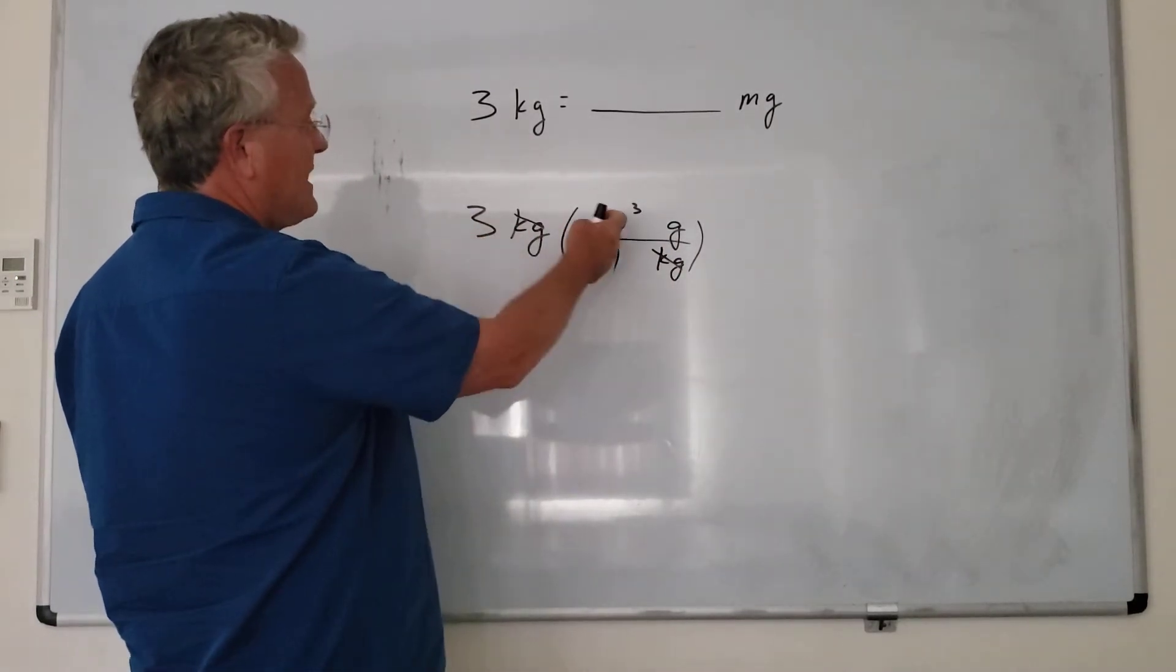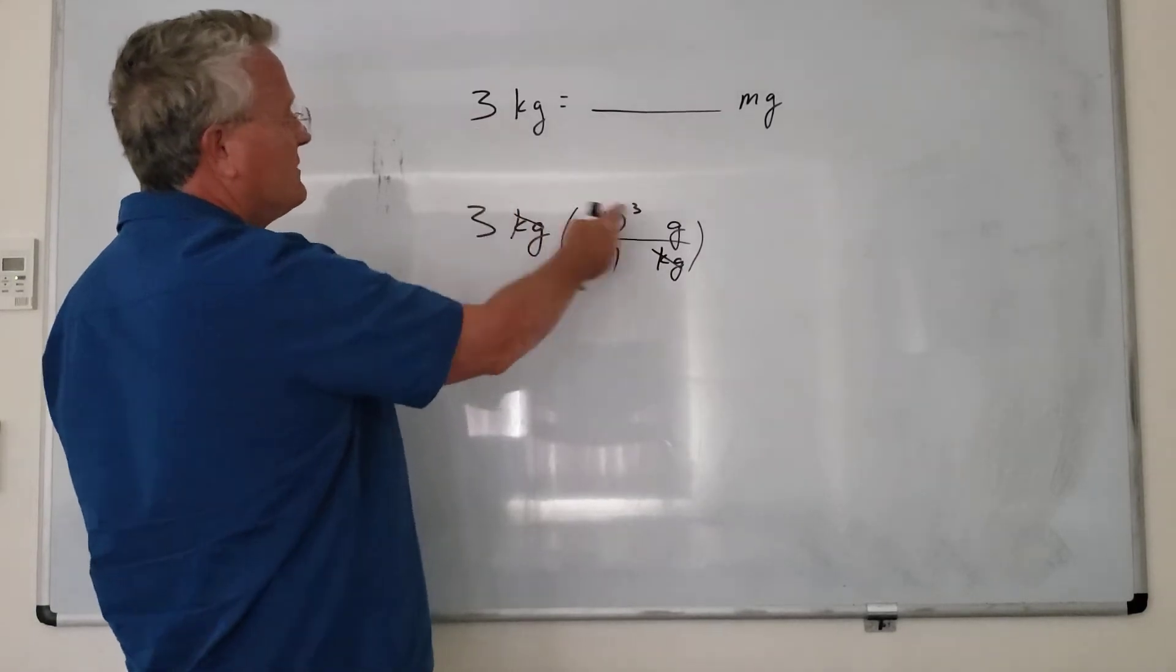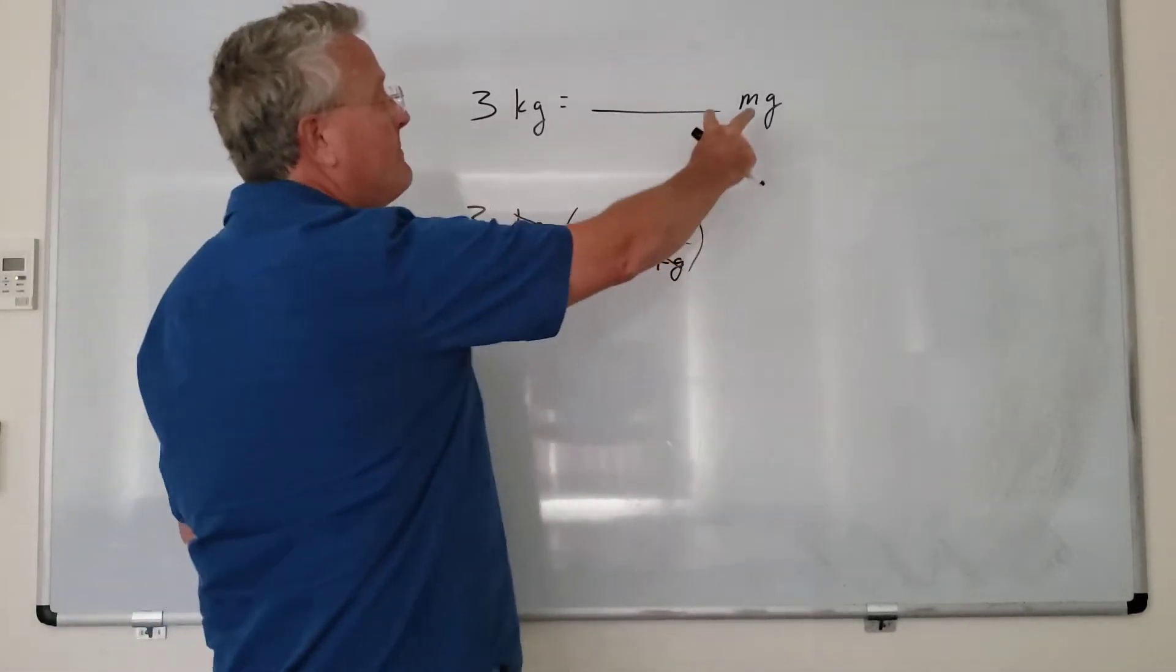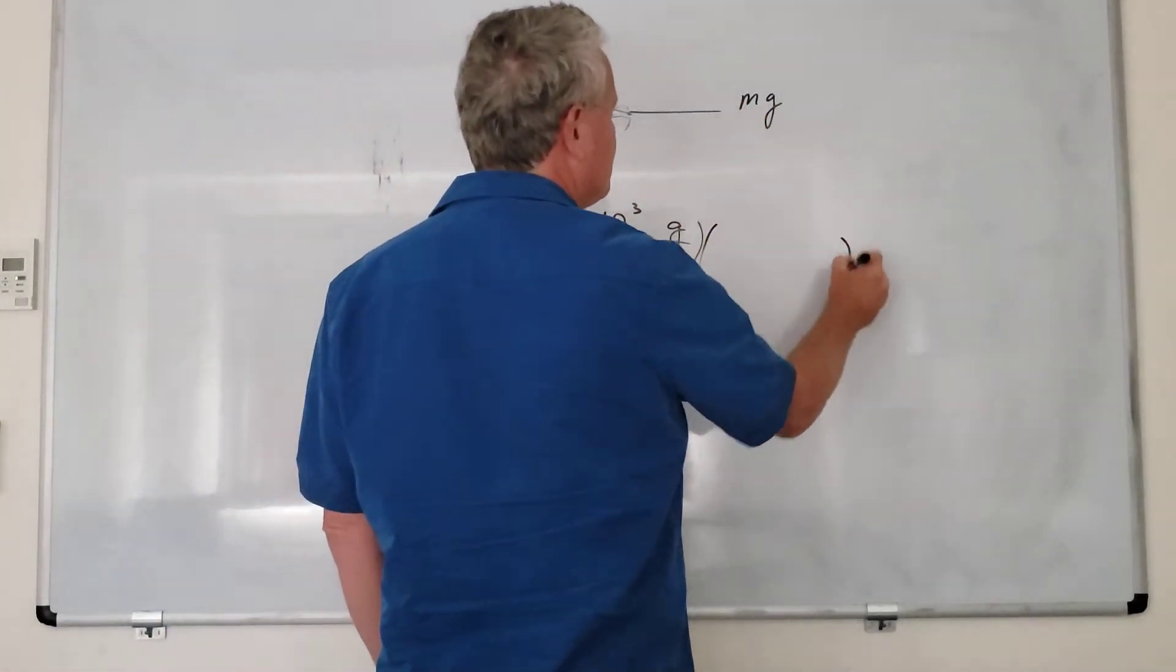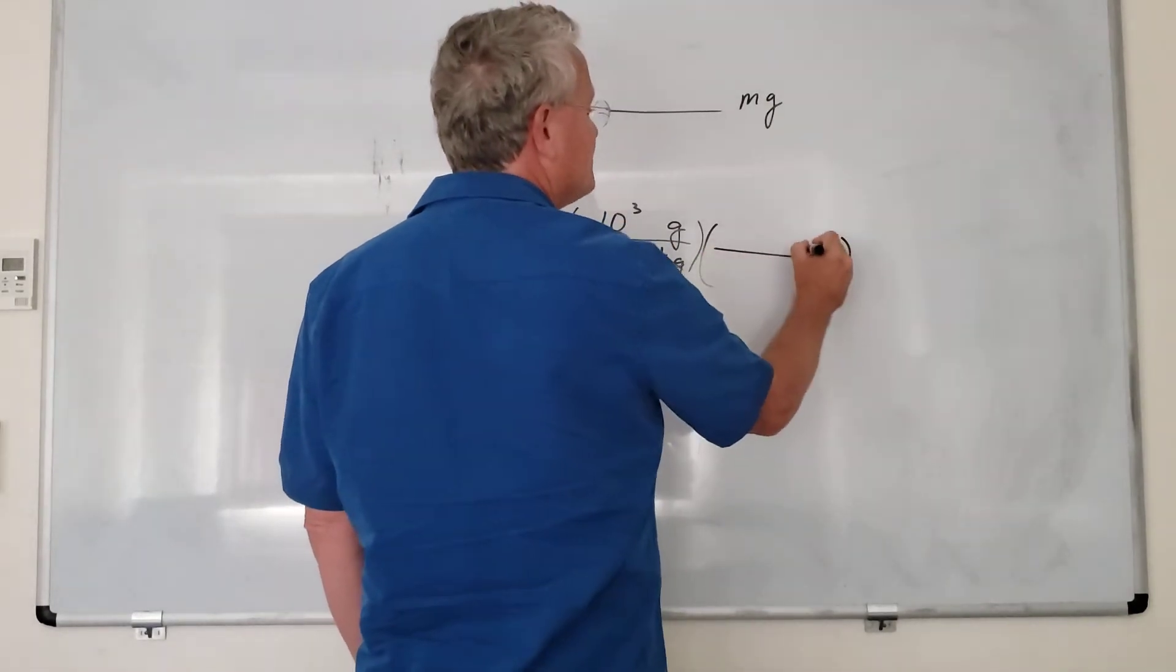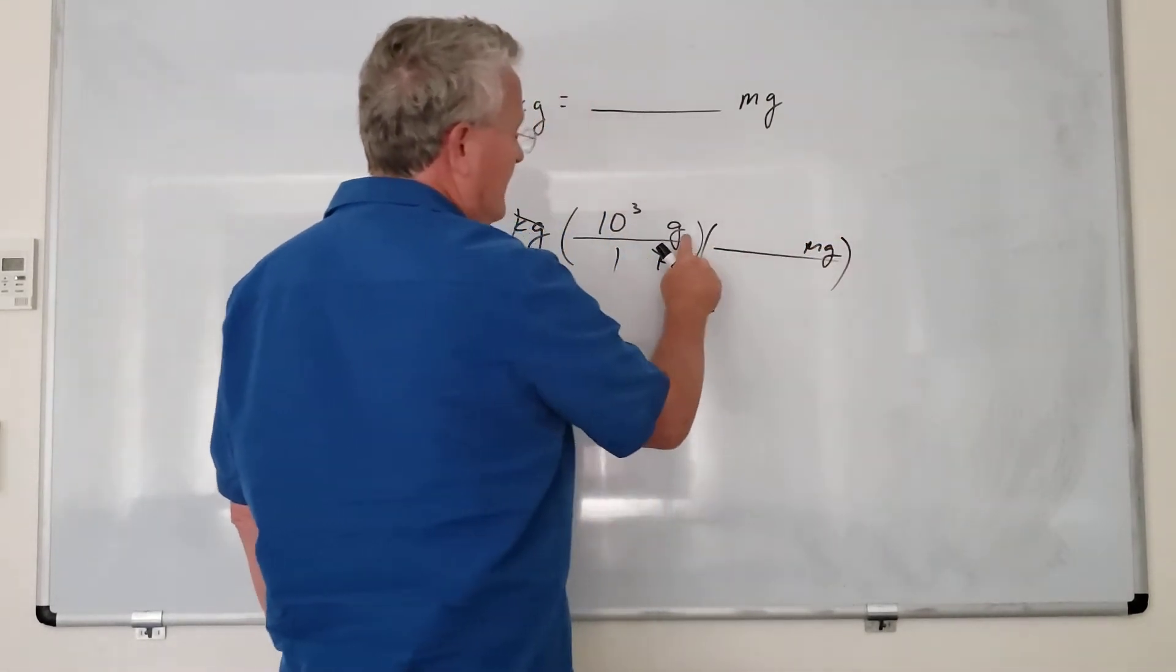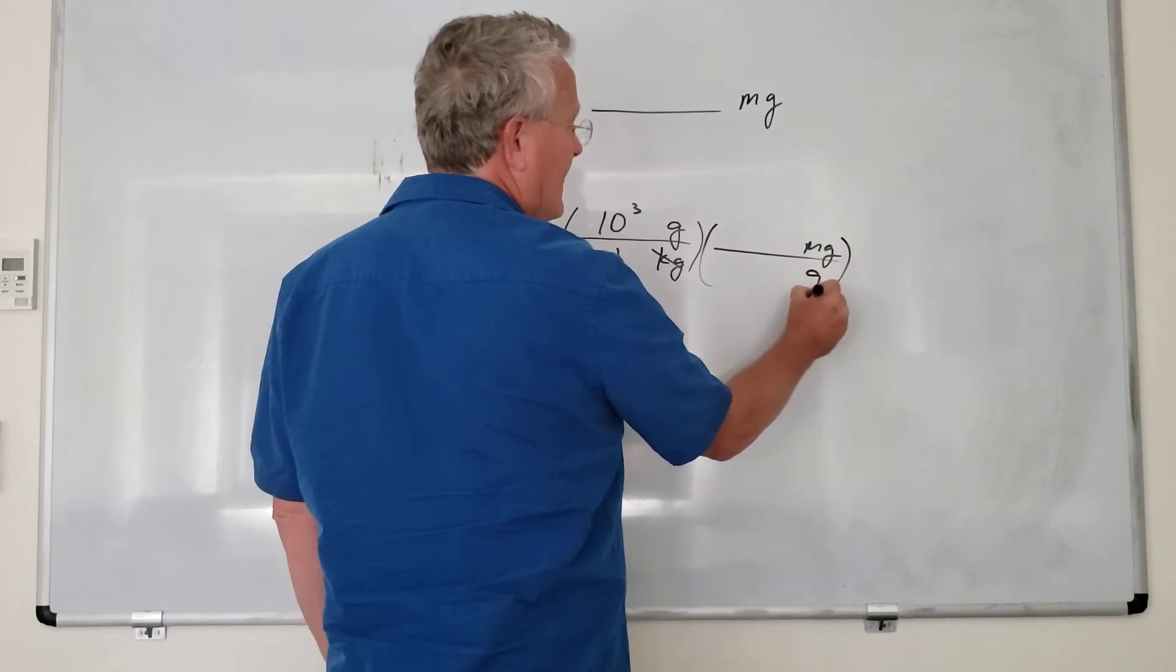So this is three times 1000, which is equal to 3000 grams. But we want to convert to milligrams, so whatever this is, that's what we want on top.